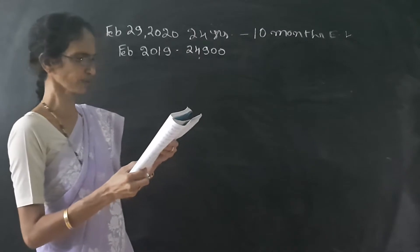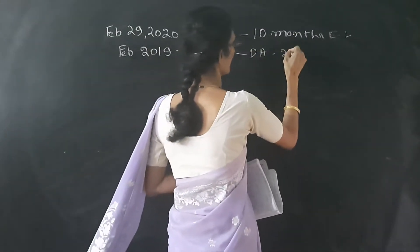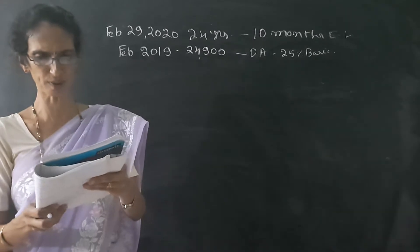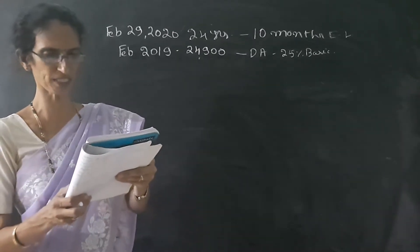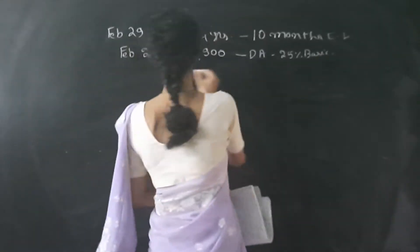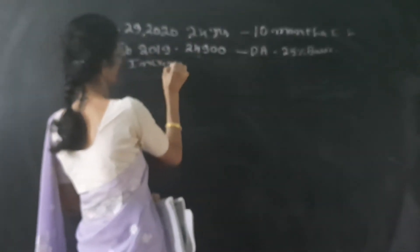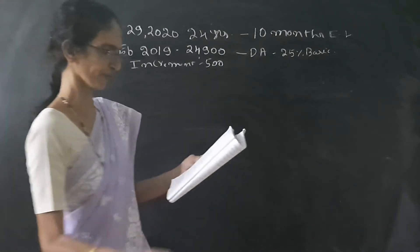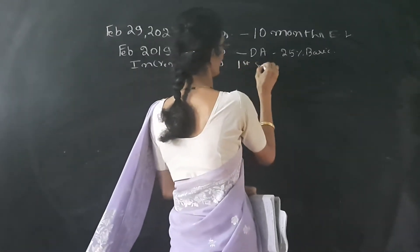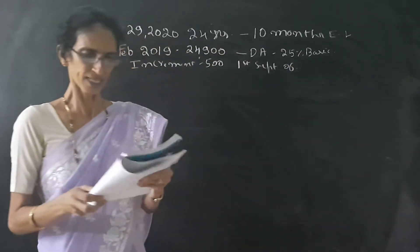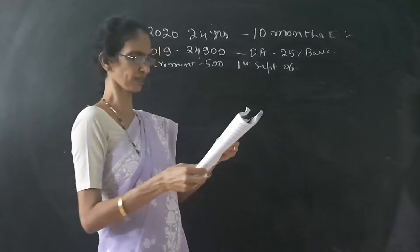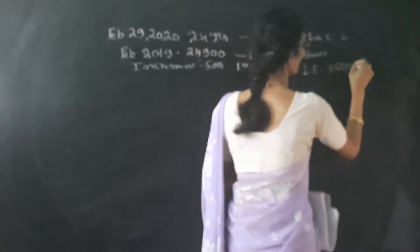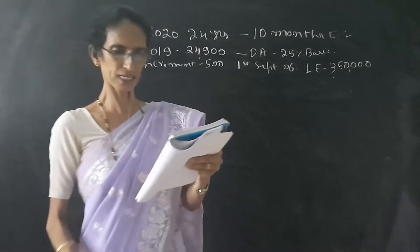DA is given at 25% of basic. He was entitled to an annual increment of rupees 500, which falls due on 1st September of every year. He received rupees 3,50,000 on leave encashment.